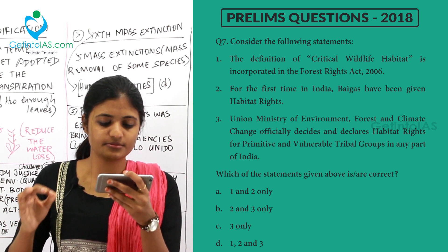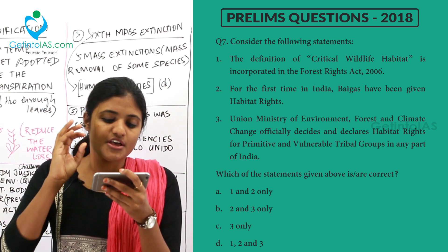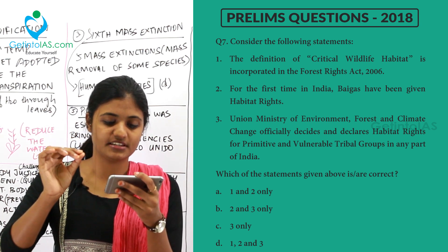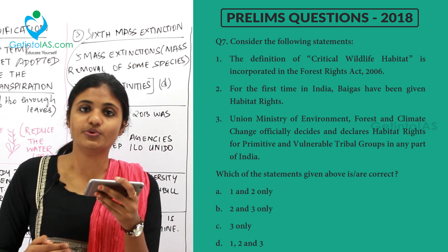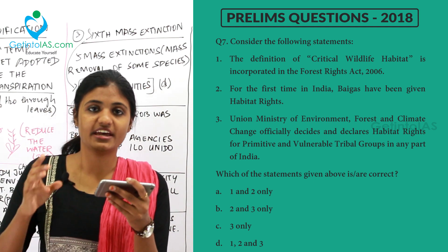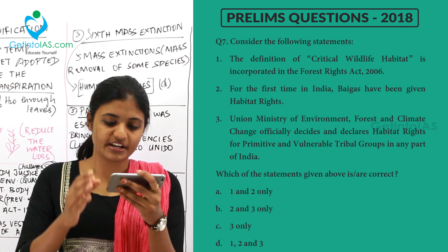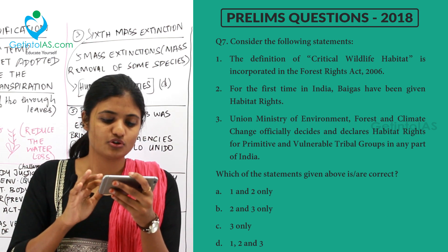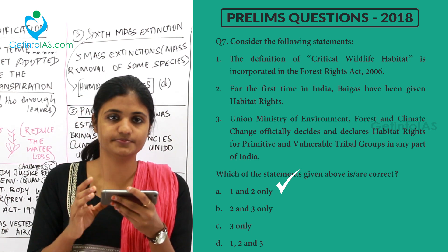Third: the Union Ministry of Environment, Forest and Climate Change officially decides and declares habitat rights for primitive and vulnerable tribal groups in any part of India. This is incorrect — it is not the Union Ministry of Environment, Forest and Climate Change. It is the state government, on the recommendation of the Gram Sabha, that gives the habitat rights for primitive and vulnerable tribes. So statement three is wrong, and option A — one and two only — is the correct answer.